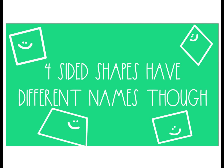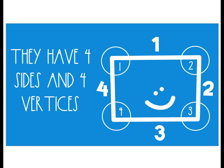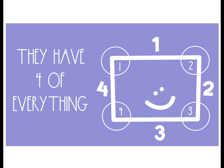Four-sided shapes have different names though: square, rhombus, trapezoid, and rectangle. They have four sides and four vertices — they have four of everything.